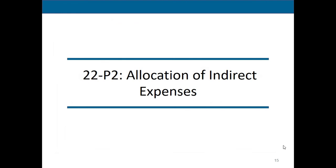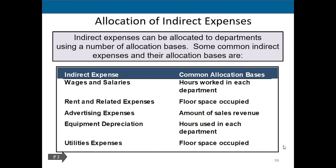When allocating indirect expenses across many departments, we use different allocation bases depending on the type of expense. We're never going to say we'll allocate everything based on floor space — that wouldn't make sense for equipment depreciation or advertising expenses. There are common allocation bases that match specific types of indirect expenses, and they vary accordingly.